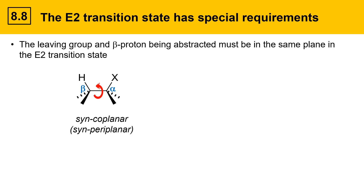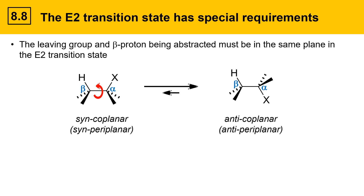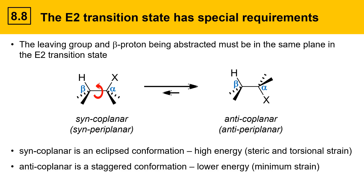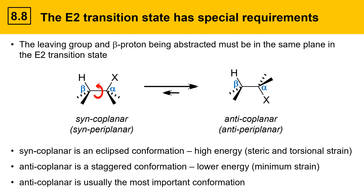It's also possible to rotate about this single bond, giving a different conformation where the leaving group and the beta proton are still in the same plane — but in this case, the groups are anti to one another. This conformation is called anticoplanar or antiperiplanar. Syncoplanar is an eclipsed conformation with high energy; it has steric and torsional strain. Anticoplanar, in contrast, is a staggered conformation — lower in energy with a minimum amount of steric strain. Therefore, anticoplanar is usually the most important conformation because it's the most stable.